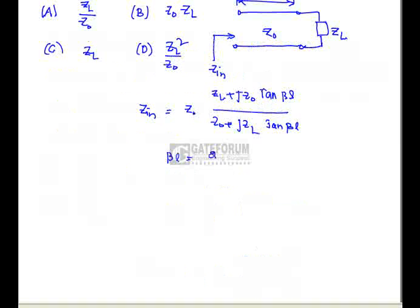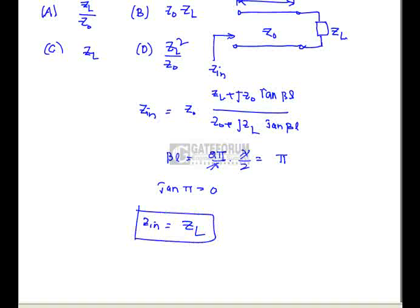Here beta L as 2 pi by lambda into length is lambda by 2 which is equal to pi. Hence tan pi is equal to 0 means Zin equals to ZL if we substitute the tan pi equals to 0 into the equation Zin equation we will get Zin equals to ZL which is option C is correct.